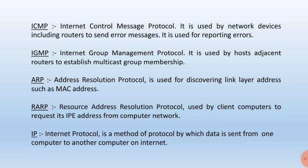ICMP stands for Internet Control Message Protocol. It is used in internetworking devices including routers to send error messages and is used for reporting errors. If any error occurs in the transmission, it gives an error message to the sender or receiver. IGMP is the Internet Group Management Protocol, used by hosts and adjacent routers to establish a multicast grouping membership.